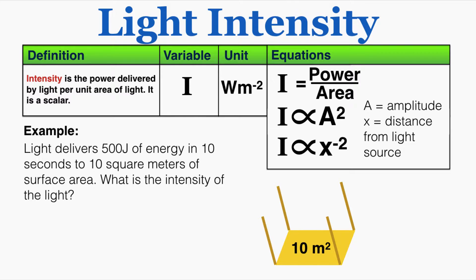There are a few different equations we use in IB Physics to understand intensity. Besides being equal to power over area, intensity is also proportional to the amplitude of a wave squared, and it's also proportional to the inverse square of the distance from the light source. We'll talk about what that means in just a moment.